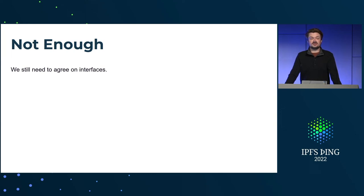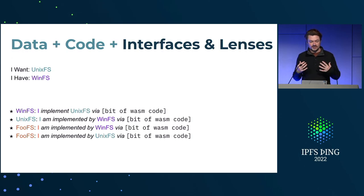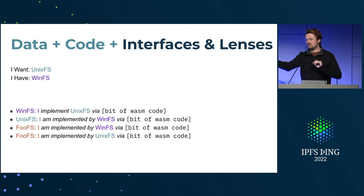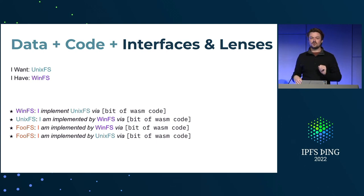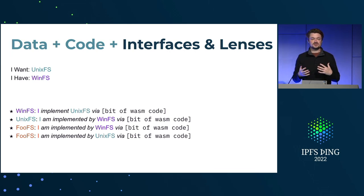At least we don't have to agree on exact implementation details, but we still need to agree on what a file is, how we want to do this. We may be able to get away with not agreeing on naming by using numbers and saying names are implementation-specific. But we at least need to agree on what types of arguments you want, what the semantics are, all that kind of stuff. So really what we need is data plus code plus interfaces — and lenses.